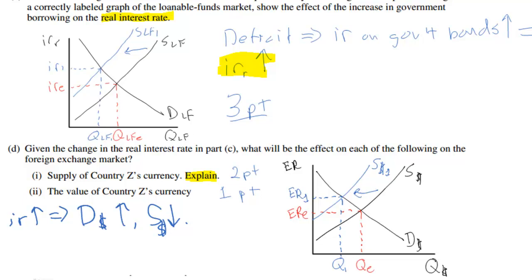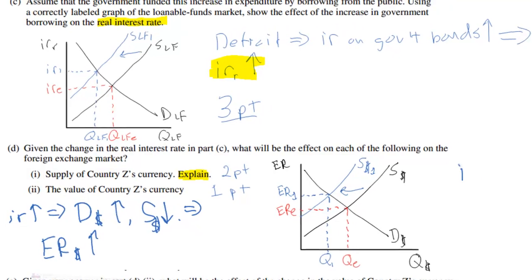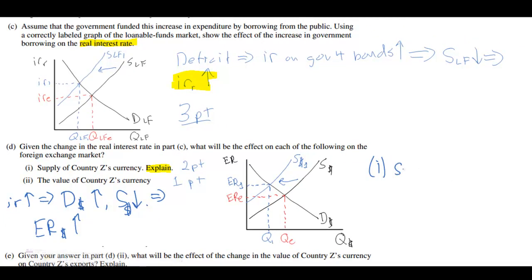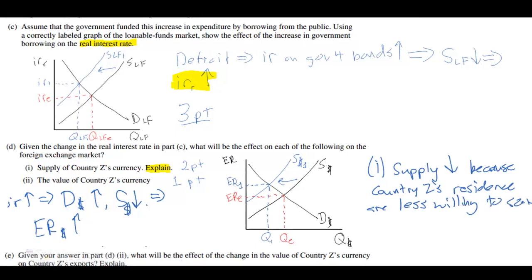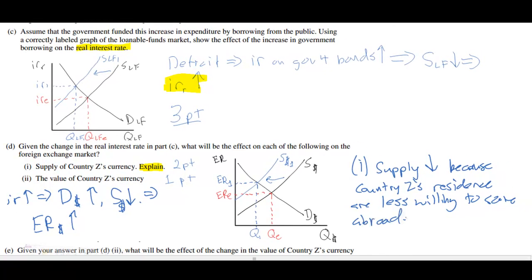Fewer people wish to save their money abroad now that interest rates are higher in country Z. This causes the exchange rate to increase and the quantity demanded abroad to decrease. So even though a graph wasn't required, we can see the outcome clearly. For part D(i): the supply decreases because country Z's residents are less willing to save abroad. For part D(ii), which is a one-point question: the currency will appreciate — it will grow stronger relative to other currencies on the foreign exchange market.